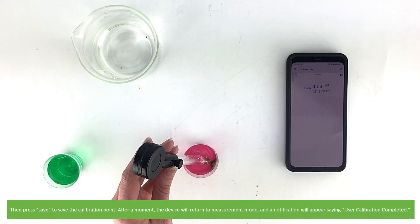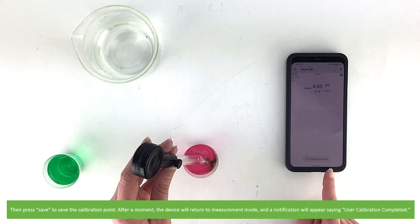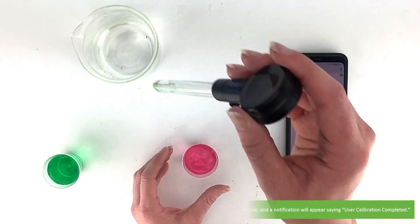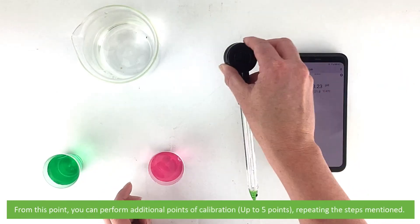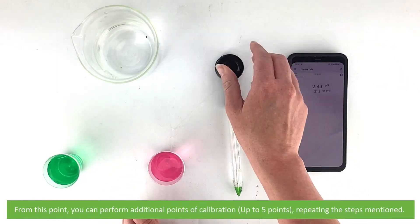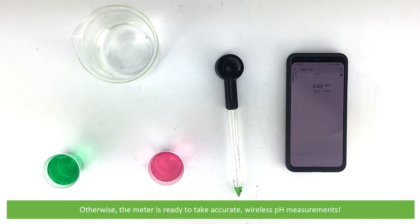After a moment, the device will return to measurement mode and a notification will appear saying user calibration completed. Rinse the electrode in deionized water. From this point you can now perform additional points of calibration repeating the steps mentioned. Otherwise, the meter is ready to take accurate wireless pH measurements.